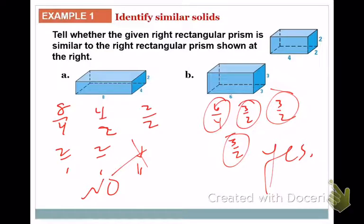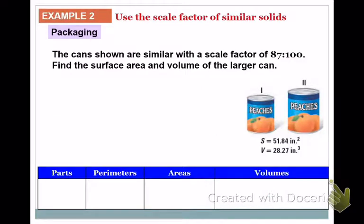For a cylinder, you'd only have two dimensions to check: the radius and the height. It just depends on what dimensions you have to worry about to determine if two solids are similar. Now, how to use the idea of similar solids — we have these two cans of peaches. They're similar and have a scale factor of 87 to 100.